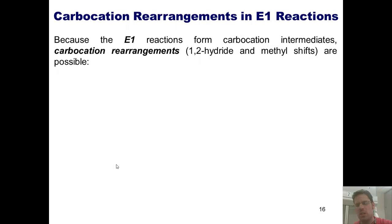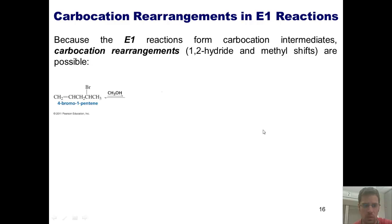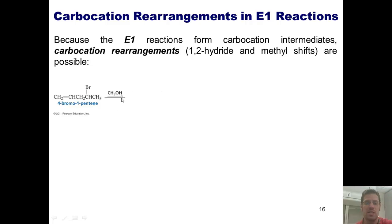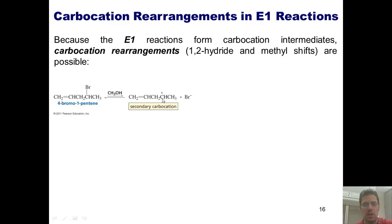In an earlier example, you might remember that I pointed out that in E1 scenarios, we can get carbocation rearrangements. Here's another one. I've got a bromine attached to this position, and it's reacting with a weak base, methanol. There are no localized negative charges on this, thus it's going to proceed by an E1 mechanism. It stirs around in solution, this bromine falls off, and gives me a secondary carbocation here.